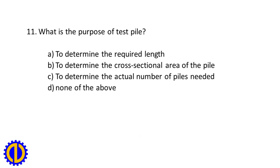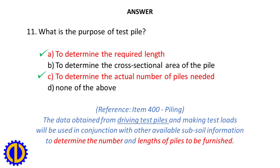Question 11. What is the purpose of a test pile? A. To determine the required length. B. To determine the cross-sectional area of the pile. C. To determine the actual number of piles needed. D. None of the above. Answer: A and C — to determine the required length and to determine the actual number of piles needed. Reference: Item 400, Piling. The data obtained from driving test piles and making test loads will be used in conjunction with other available subsoil information to determine the number and lengths of piles to be furnished.